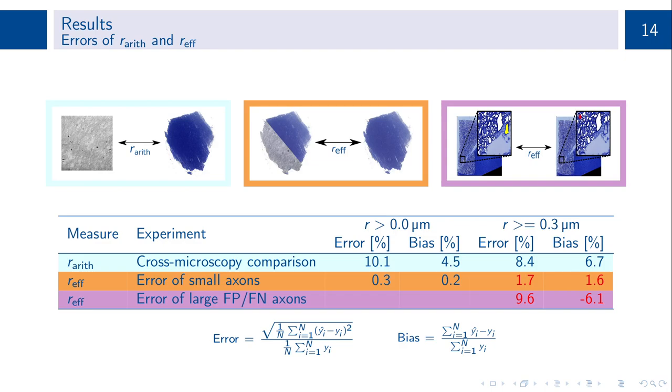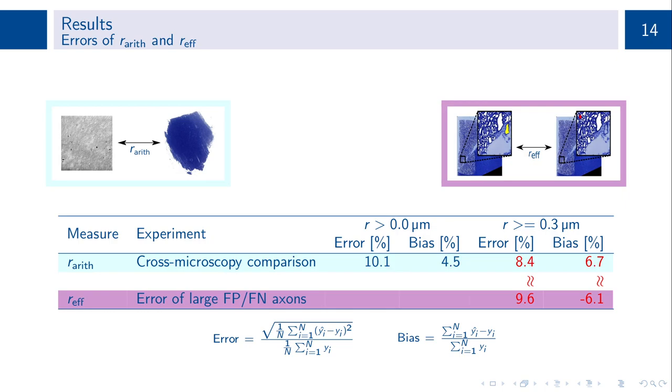Comparing the errors for the effective radius, we found that the error introduced by large false positive or false negative axons was the dominant error contribution, whereas the error introduced in the ensemble of small axons was negligible. Both error and bias of the arithmetic mean radius were comparable to those of the effective radius, albeit different sign for the bias.